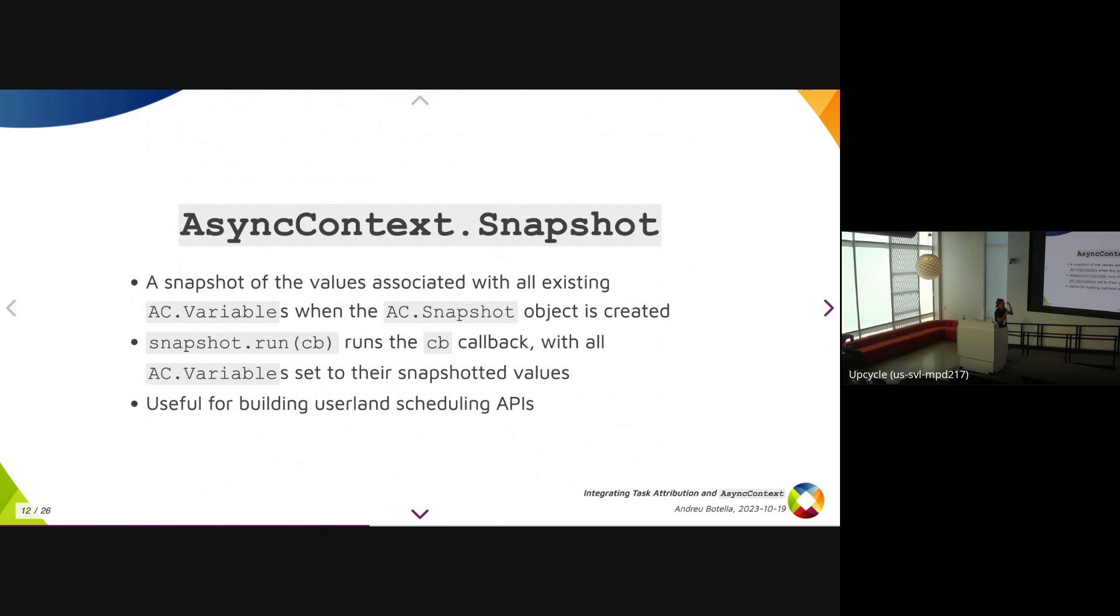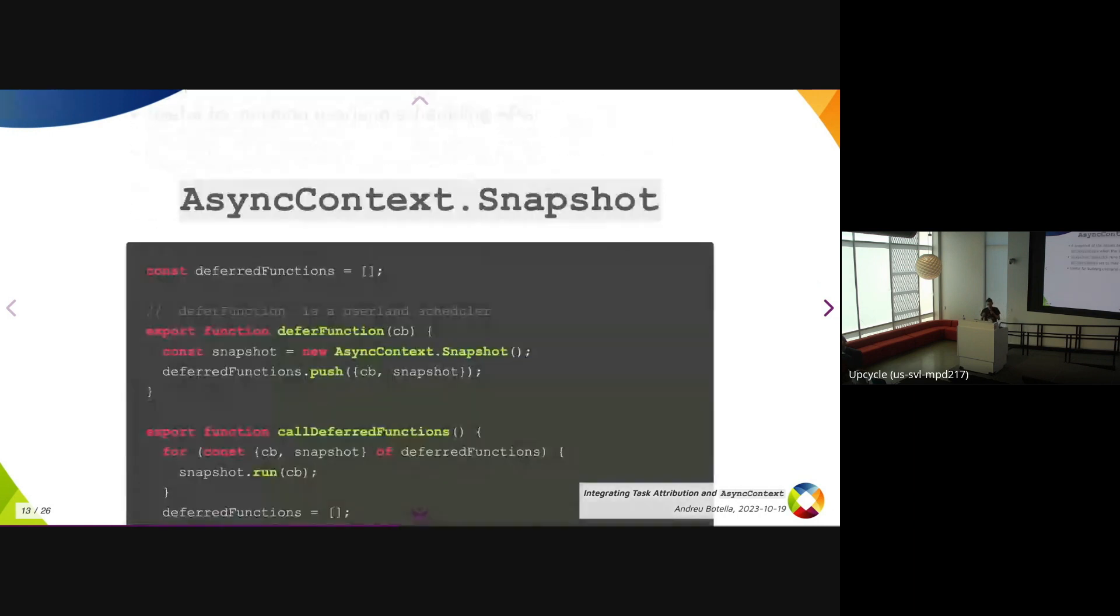You also have AsyncContext.Snapshot. At construction time, this takes a snapshot of every value associated with every existing AsyncContext.Variable at the time that you're creating the context. So you can restore this context by calling run with a callback, and it again runs the callback within the snapshotted context.